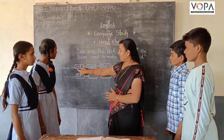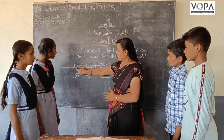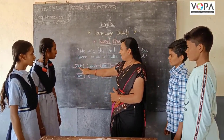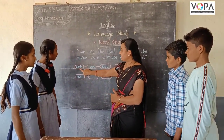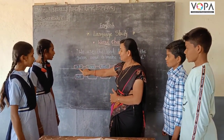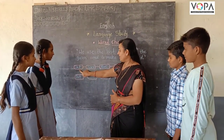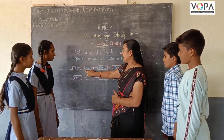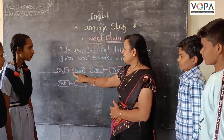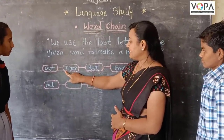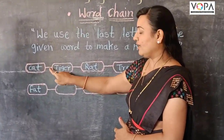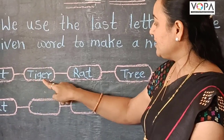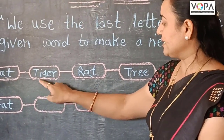Look at this: C, A, T — Cat. Which is the last letter in this word? T. That's why we write 'tiger,' because tiger starts with T.